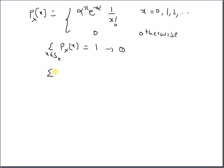Now, by definition, by using the definition of the Poisson distribution, we have x equal to 0 to infinity alpha power x e power minus alpha 1 by x factorial. This can be rewritten as e power minus alpha summation x equal to 0 to infinity alpha power x into 1 by x factorial.